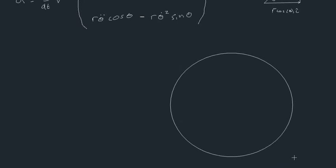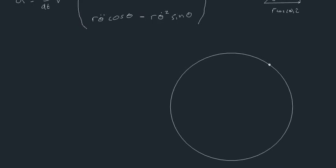Let's zoom in on our circle. Our particle is at a certain point, and at the moment we're using i and j unit vectors to describe its position. Instead, let's create a new unit vector eₜ in the tangential direction of the circle, and another unit vector eₙ pointing towards the midpoint of the circle. Velocity will always be in the eₜ direction, which simplifies things considerably.